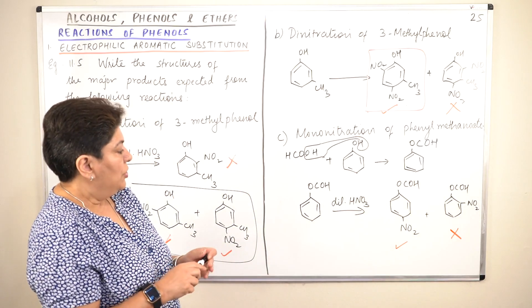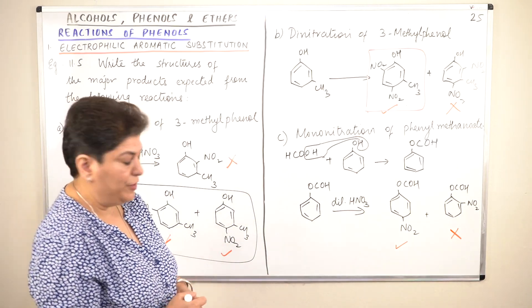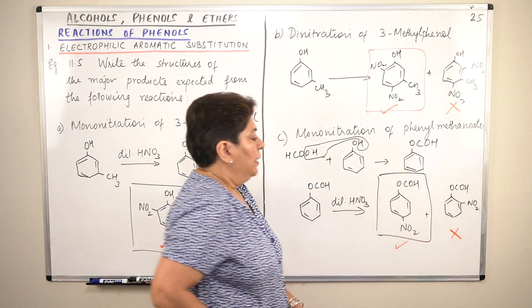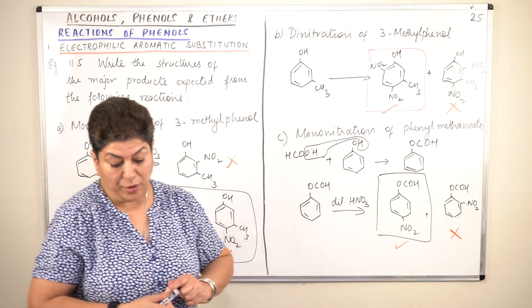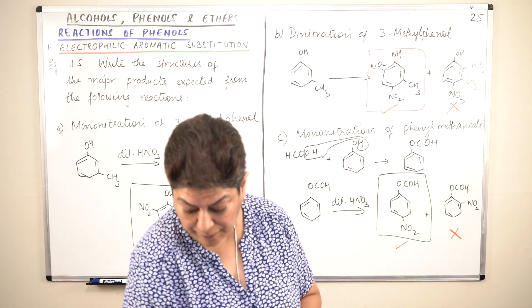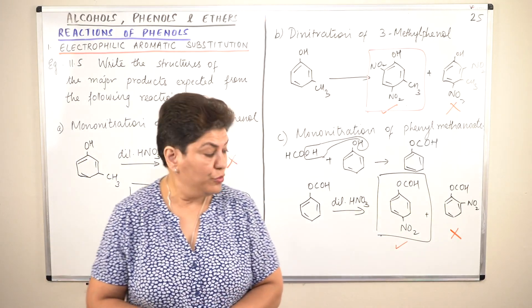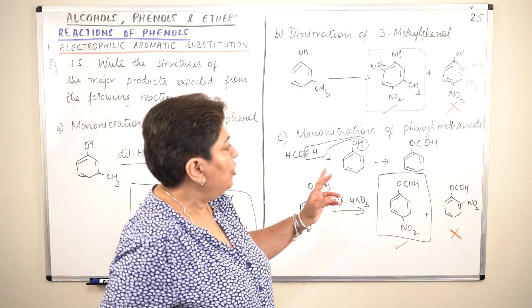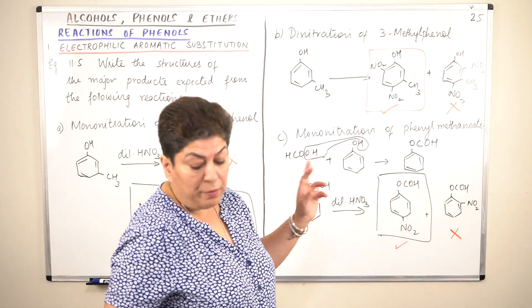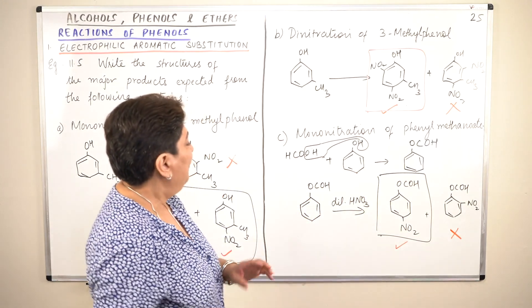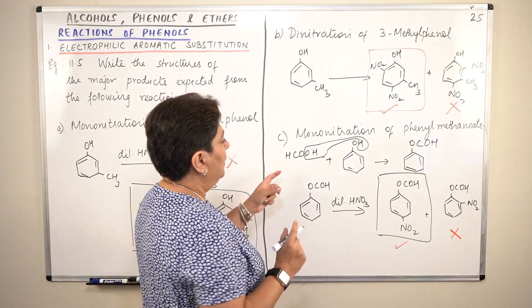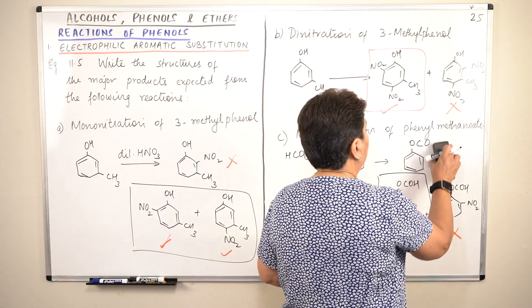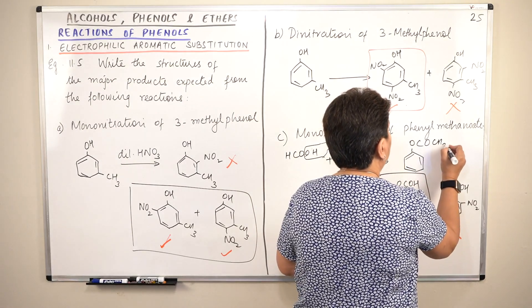Right. So this obviously is now the answer to the third part. Now there is a little problem here that in the textbook, the structure that has been given to you is of the nitro substitution of not phenyl methanoate but phenyl ethanoate. If you observe, it is OCOCH3, CH3.